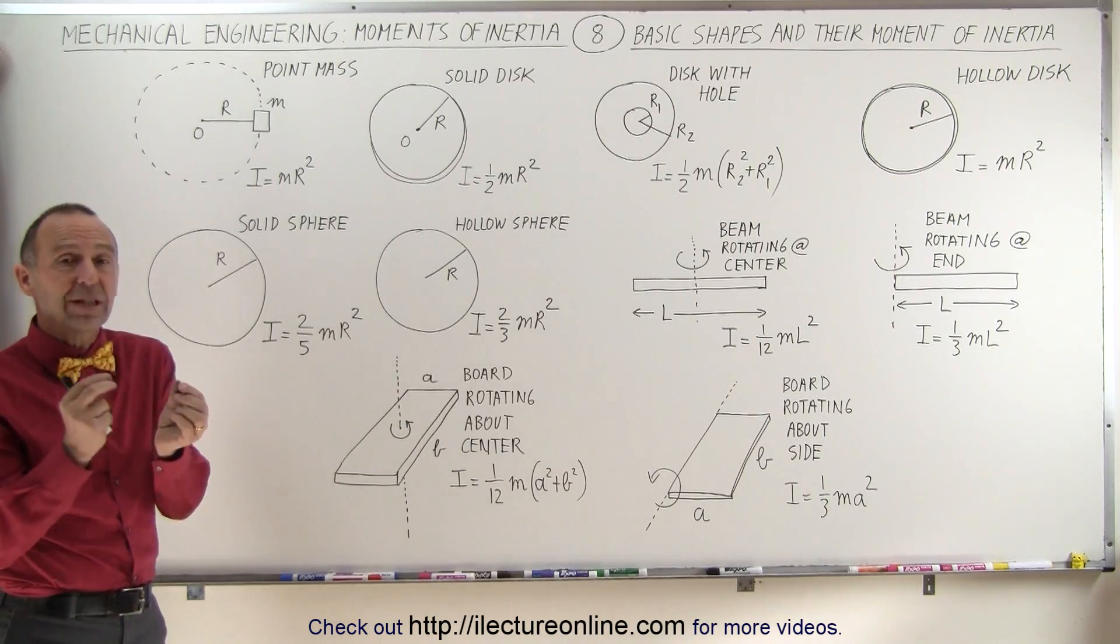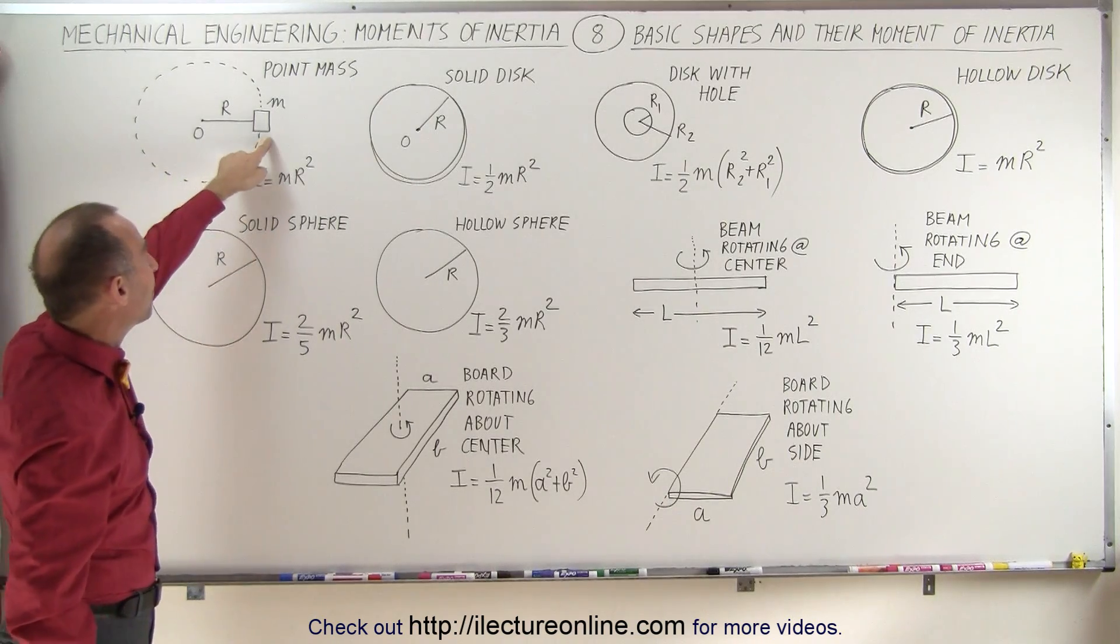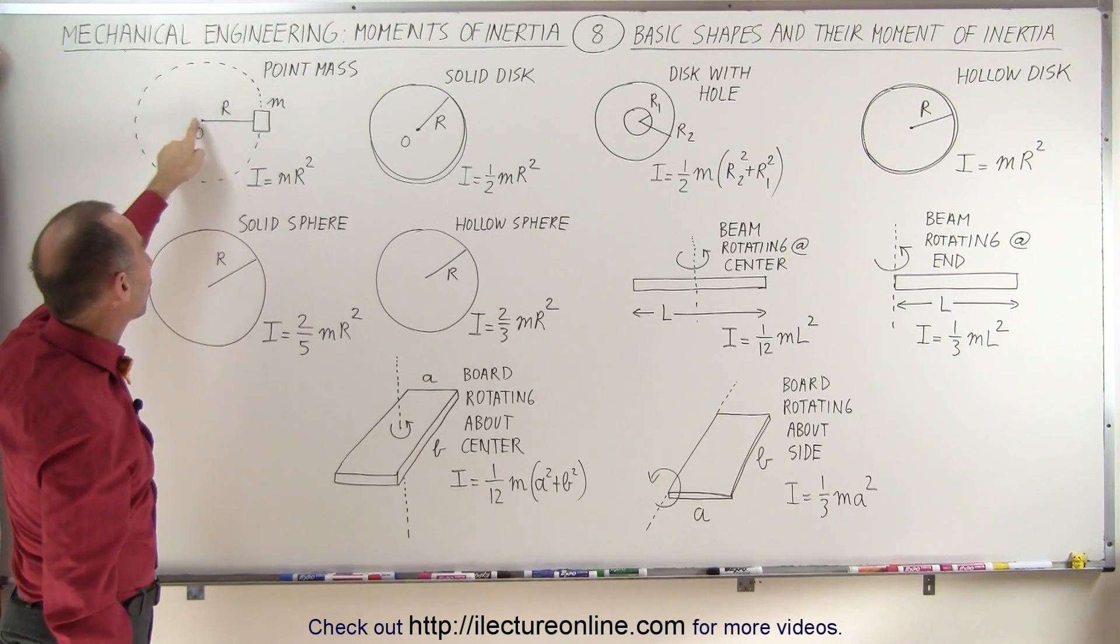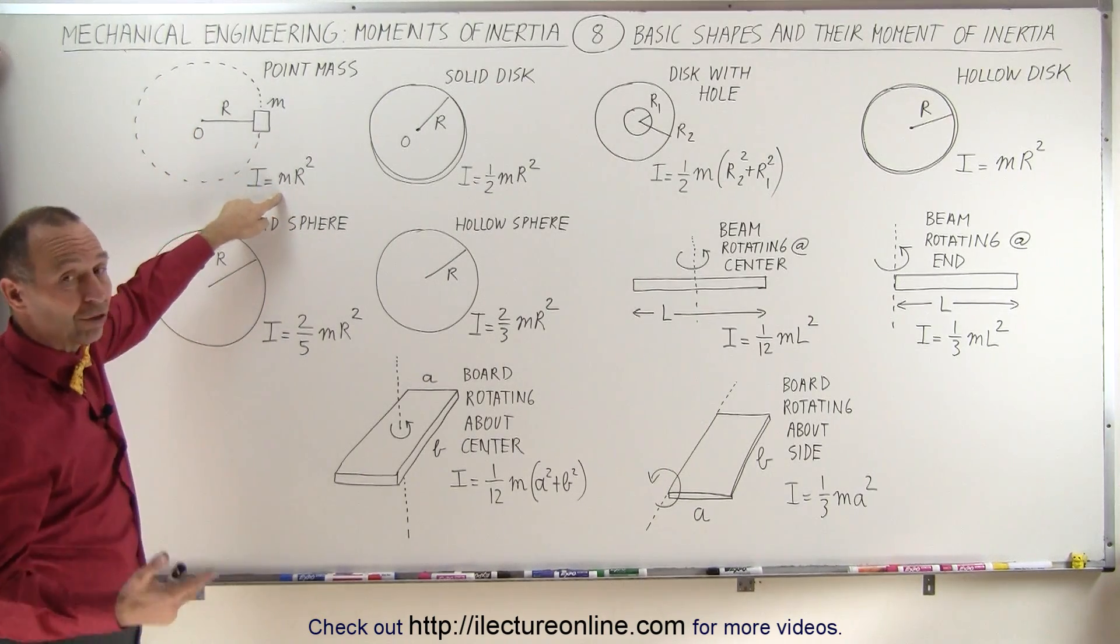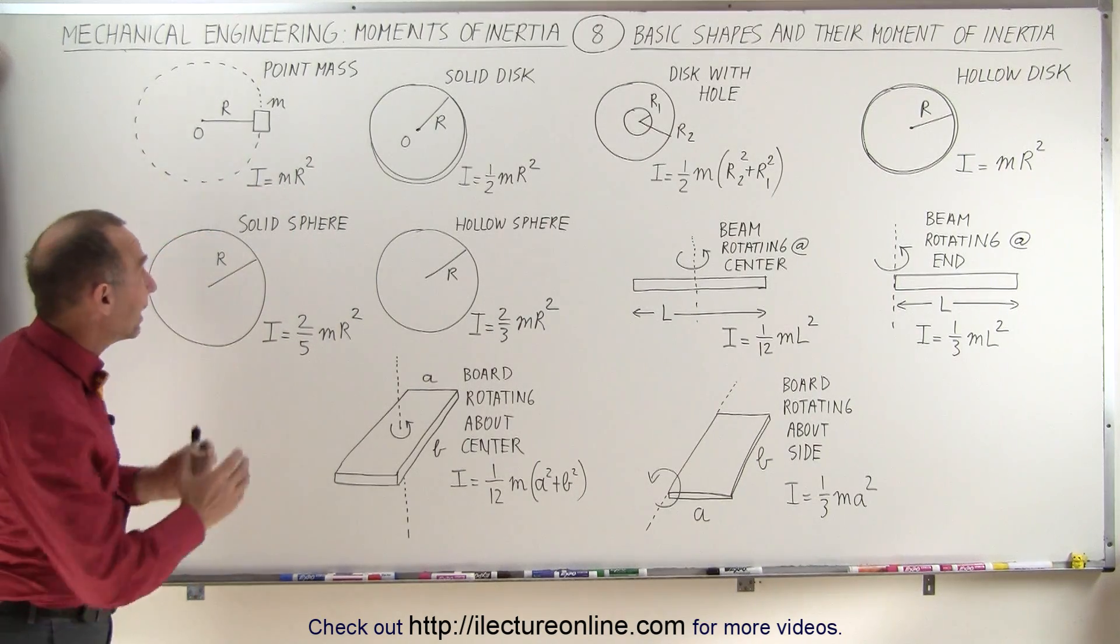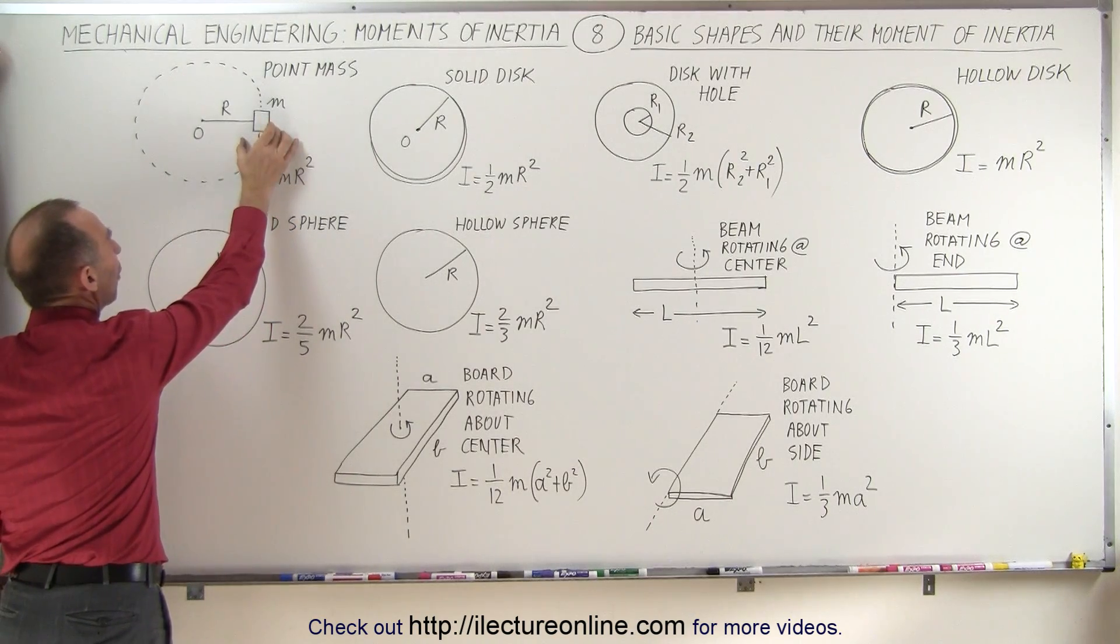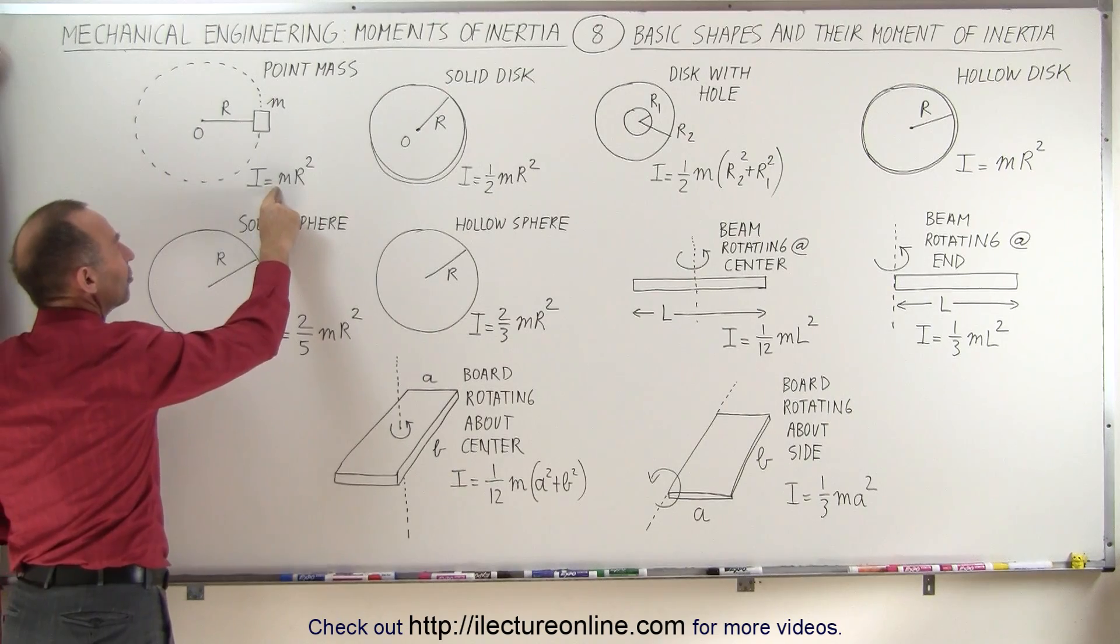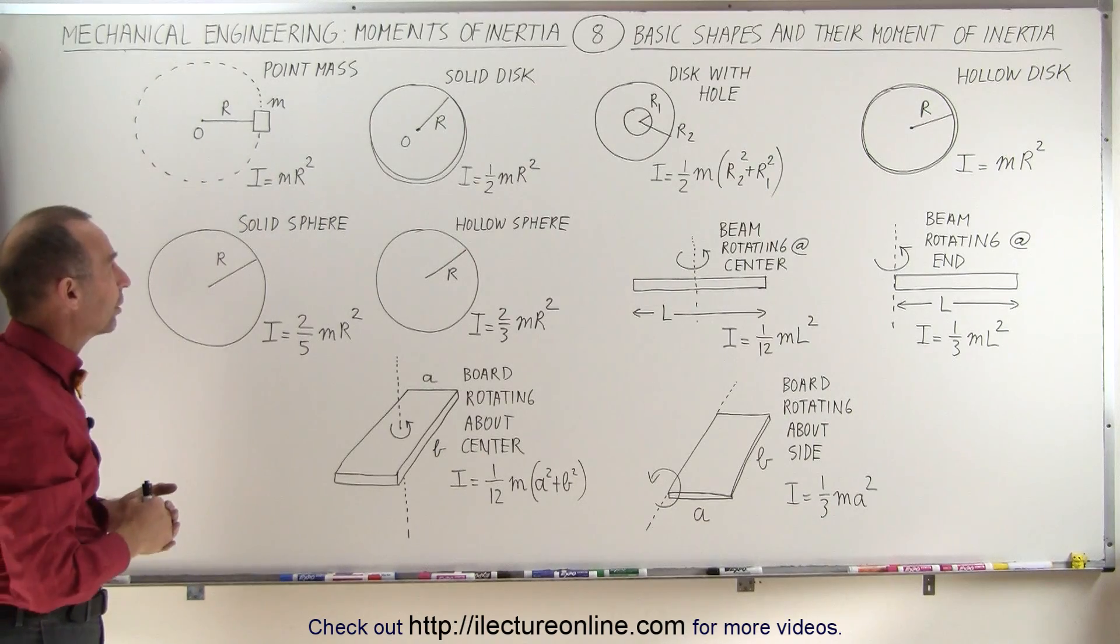Typically it's an object that rotates about some central point. Here we have a point mass rotating about point O, a distance R away from that point. The general equation of moment of inertia is mass times distance squared. If you have a point mass such that all the mass is at a single point, distance R away from the point of rotation, the numerical coefficient will always be 1. So I equals mR squared.